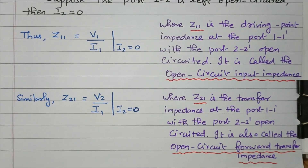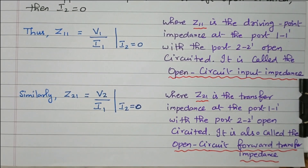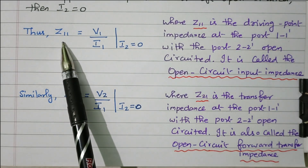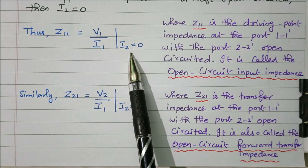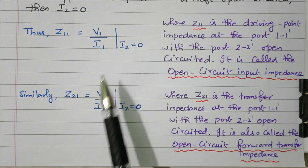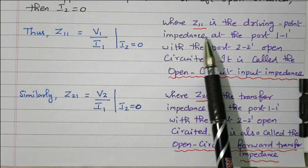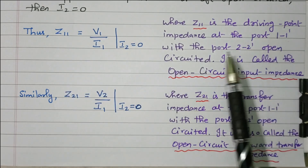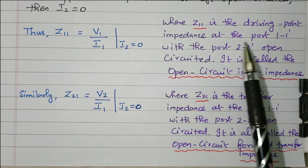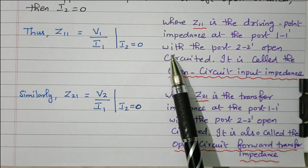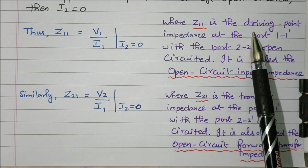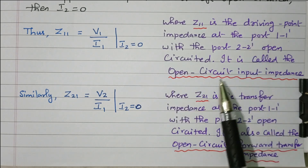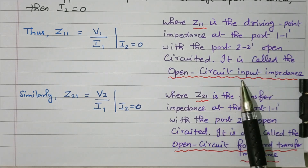Z11 equals V1 divided by I1, with I2 equal to zero — that is, the output port is kept open so the output current is zero. Z11 is the driving point impedance at port 1-1', with port 2-2' open-circuited. It is called the open circuit input impedance.